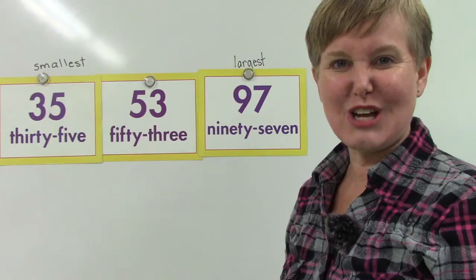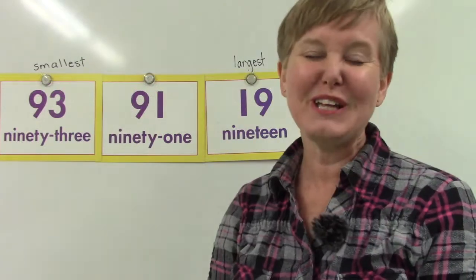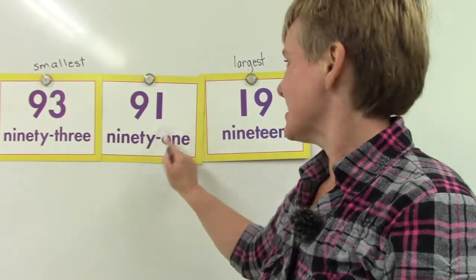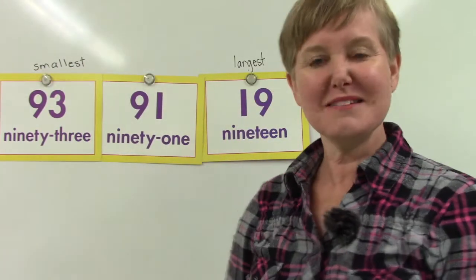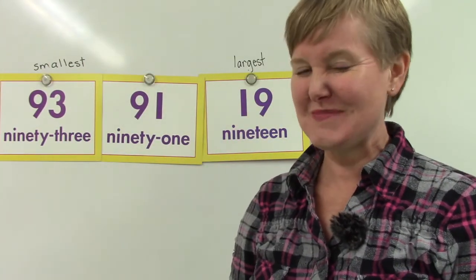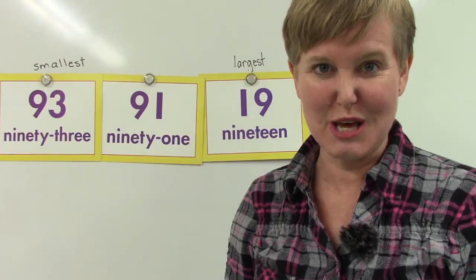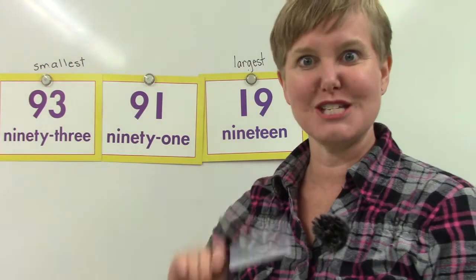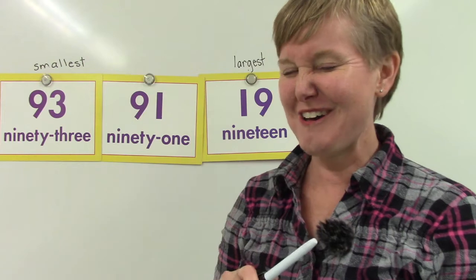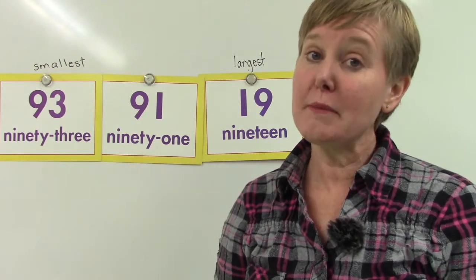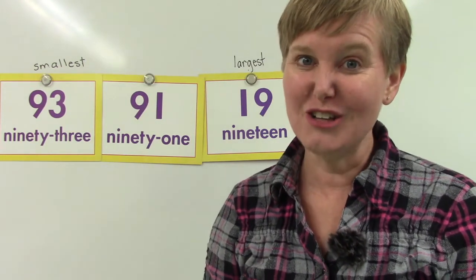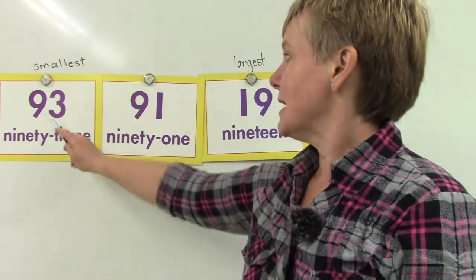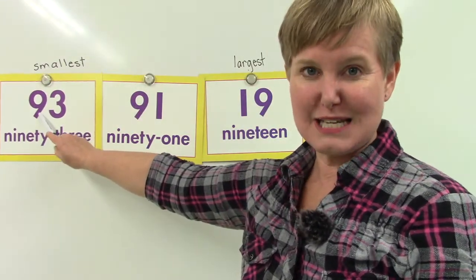Let's take a look at three more numbers: 93, 91, and 19. Can you help me rearrange them from smallest to largest? Remember, we are going to take a look at our tens place. In 93, 9 is in the tens place.